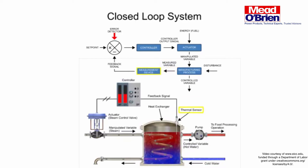The measurement device senses the measured variable and produces an output signal that represents the status of the controlled variable. The thermal sensor that measures the water temperature in the heat exchanger is the measurement device. The sensor provides an electrical signal to the controller, defined as the feedback signal in the block diagram.